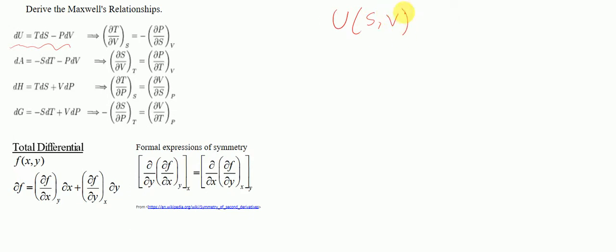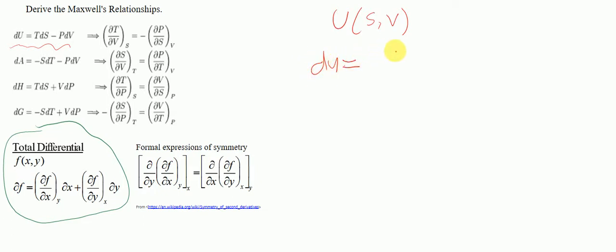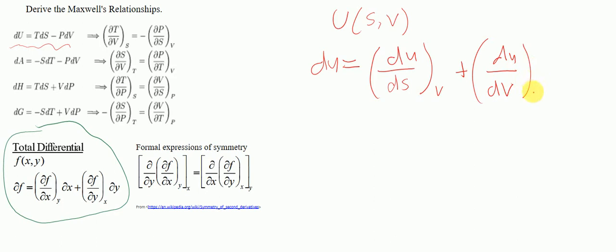After identifying this, we want to use the equation called the total differential. The total differential says that if f is a function of x and y, and we also have u as a function of S and V, we can see the similarities. So identifying f as u, x as S, and y as V, we can plug it in: du = (∂u/∂S) at constant V, plus (∂u/∂V) at constant S.